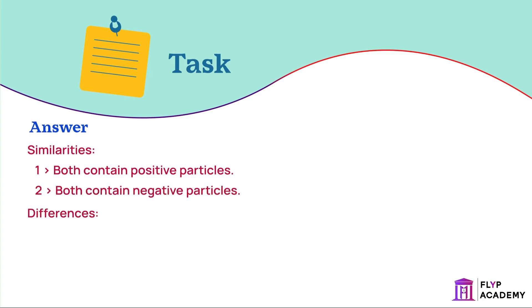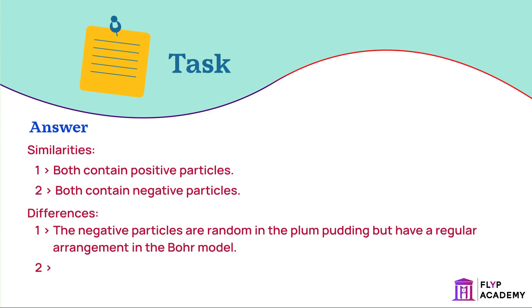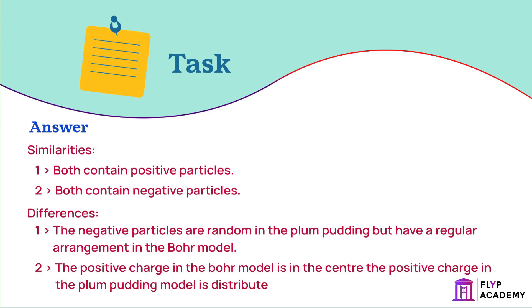Differences: The negative particles are random in the plum pudding but have a regular arrangement in the Bohr model. The positive charge in the Bohr model is in the center. The positive charge in the plum pudding model is distributed throughout.